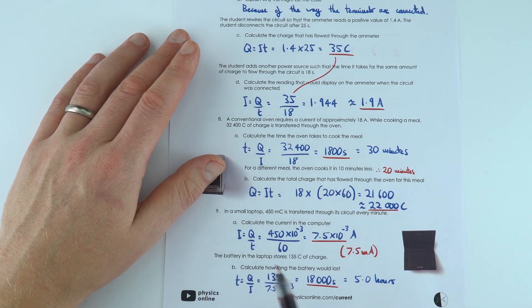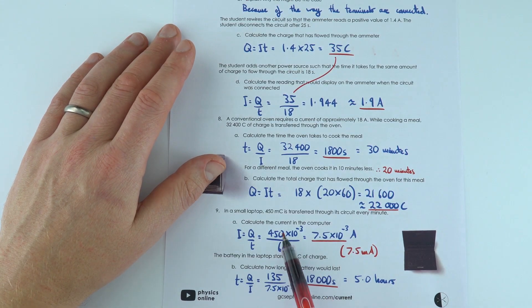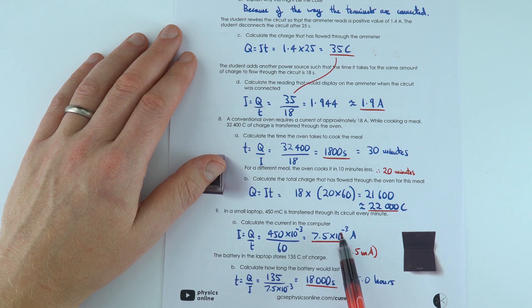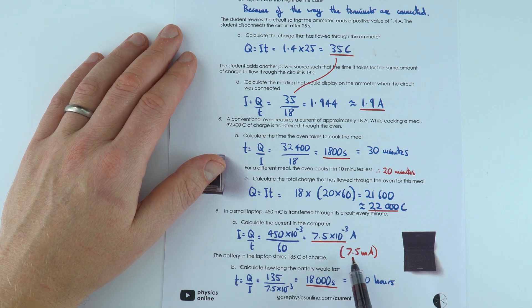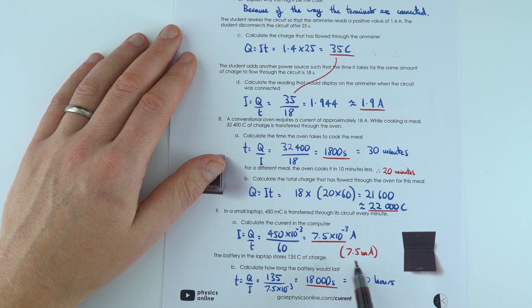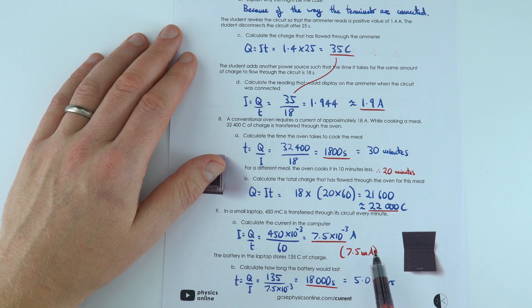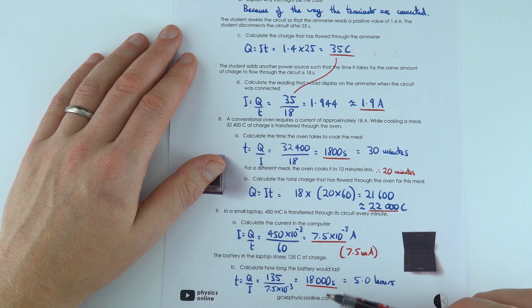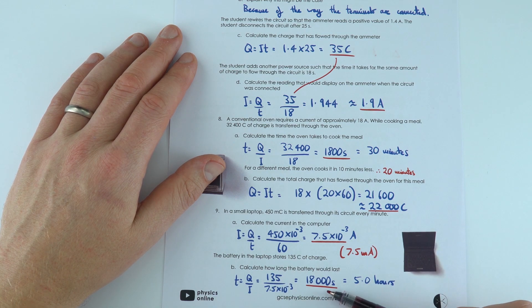And for the last one, we've got some small values. So in this computer at this time, it was 7.5 times 10 to the minus 3 amps. You can also write that as 7.5 milliamps. So 7.5 milli is just a thousandth of an amp. And actually, this means that with this laptop, the battery would last 18,000 seconds, which is 5 hours.